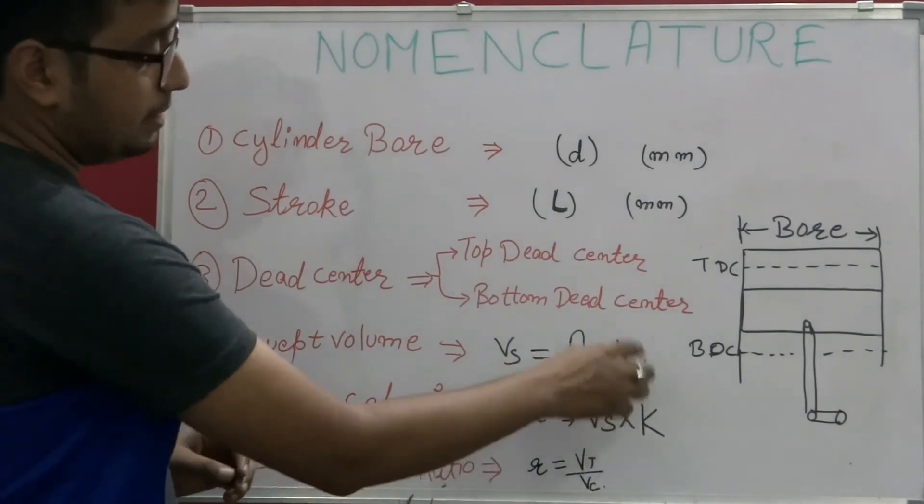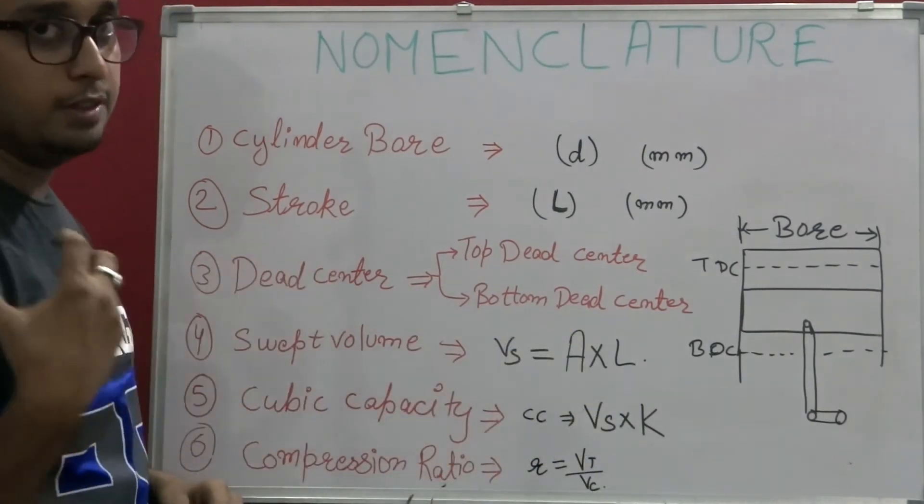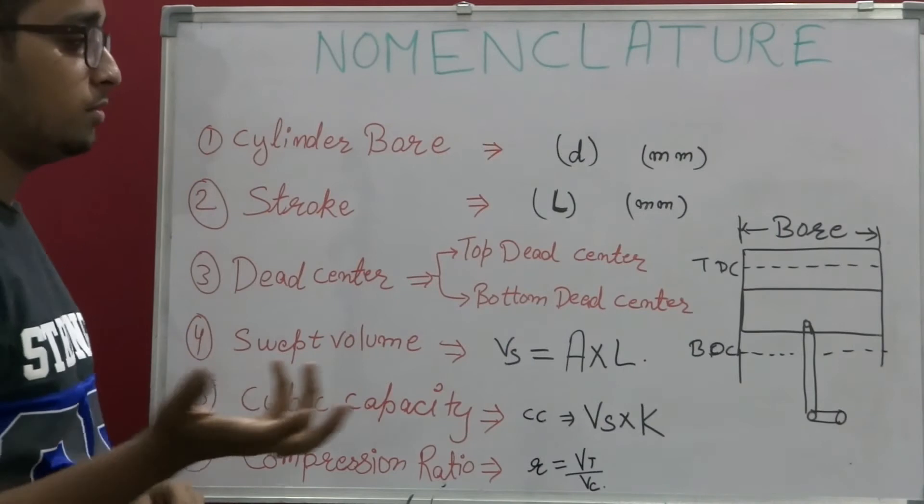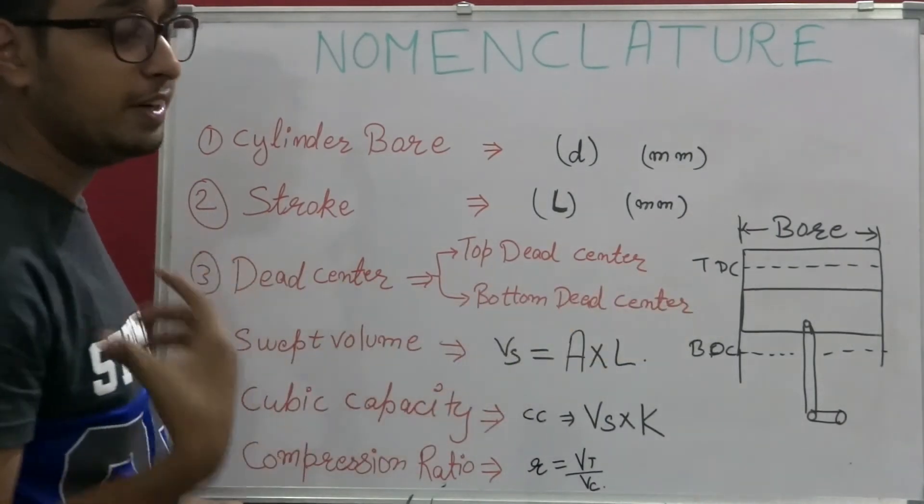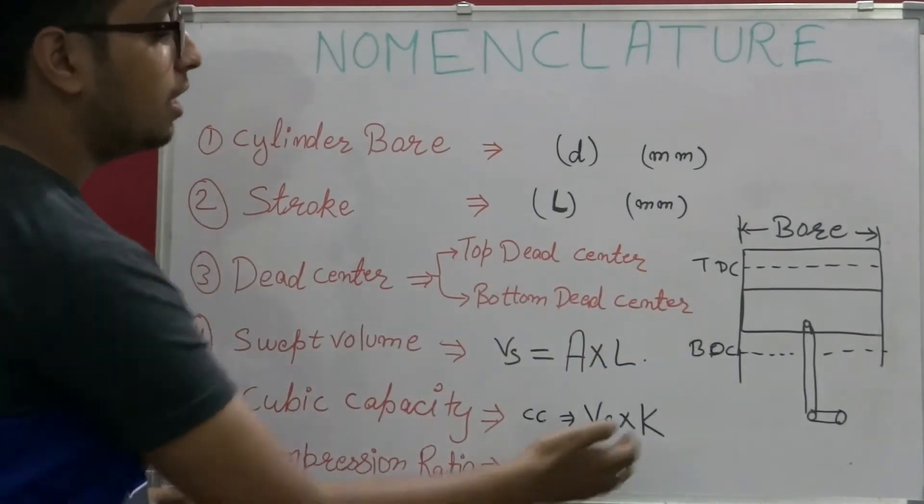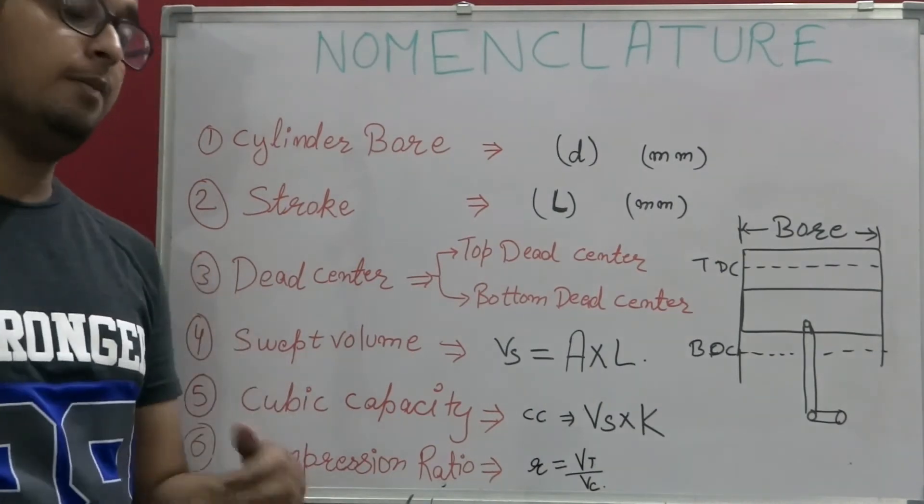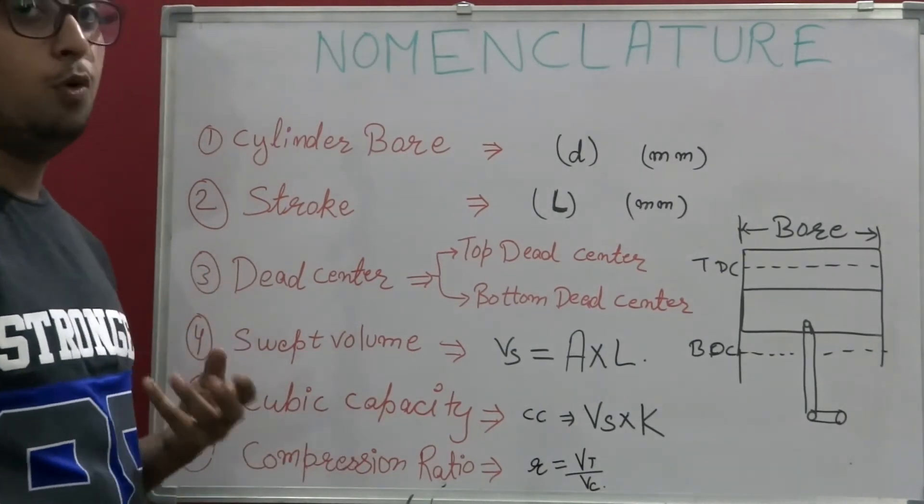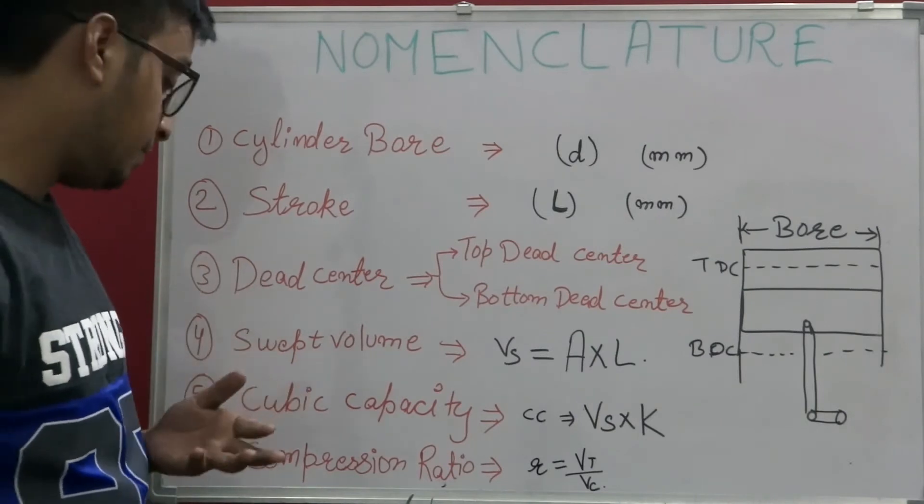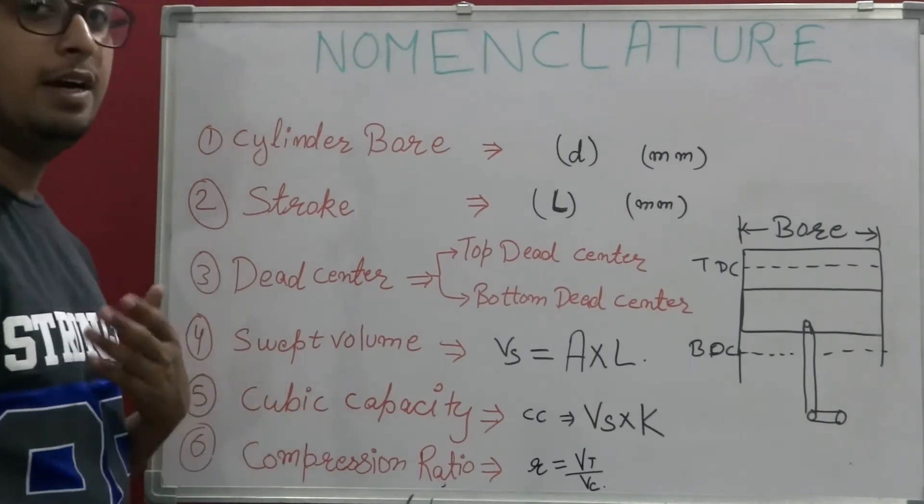The swept volume is the amount of fuel that is being swept by or used by a piston while it is travelling or in its working condition. Where K is the number of cylinders present in it - it can be 4, 6, 8, and 12 respectively.